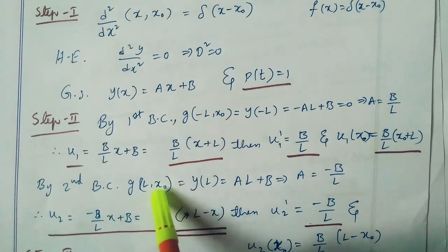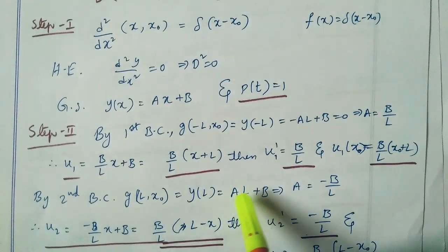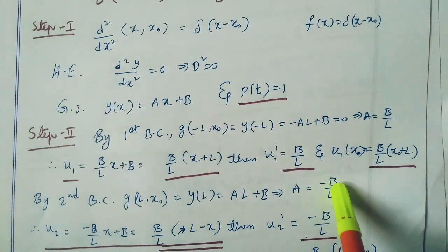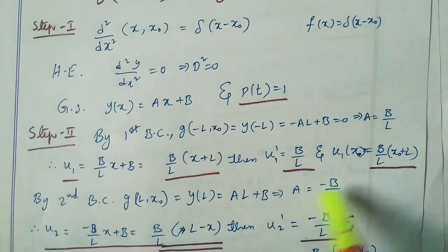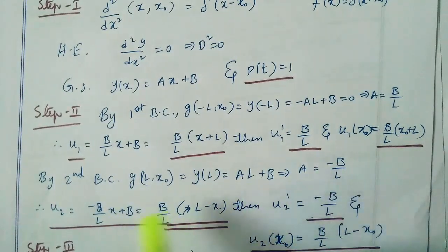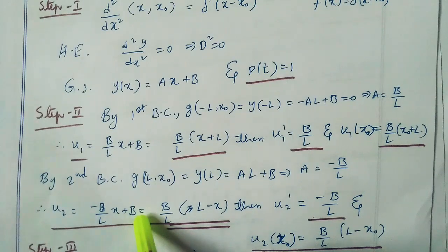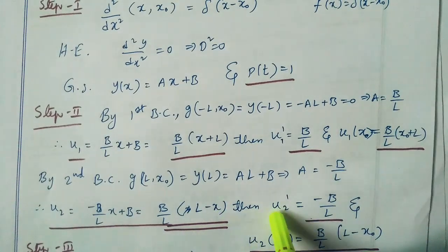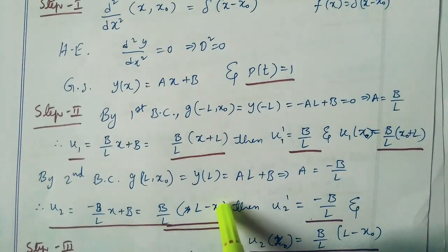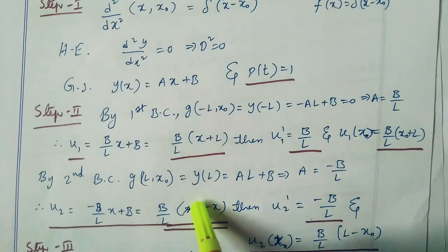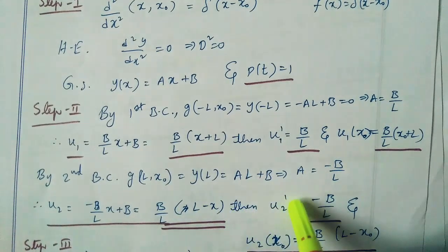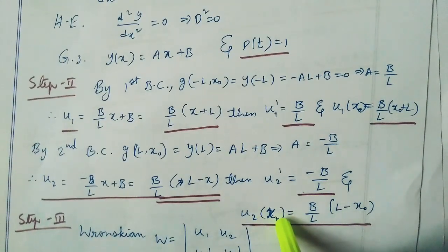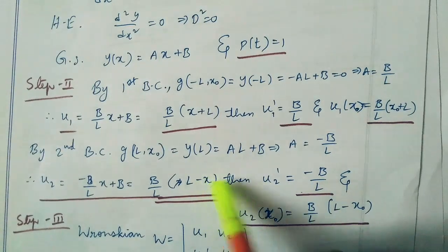By substituting a equal to b/l, u1 equal to (b/l)·x plus b, so u1 equal to (b/l)·(x plus l). Then u1 dash equal to b/l, and u1(x₀) equal to (b/l)·(x₀ plus l). By applying the second boundary condition y(l) equal to 0: al plus b equal to 0, giving a equal to minus b/l. By substituting a equal to minus b/l, u2 equal to (b/l)·(l minus x), then u2 dash equal to minus b/l, and u2(x₀) equal to (b/l)·(l minus x₀).